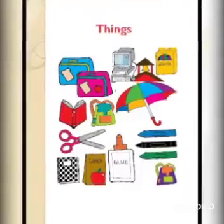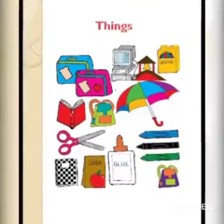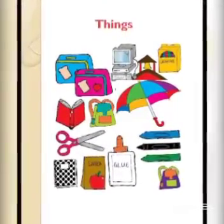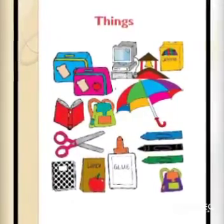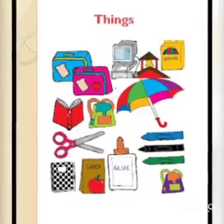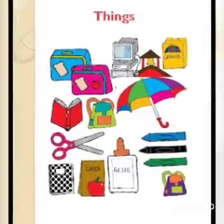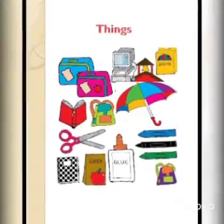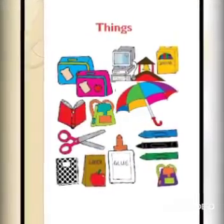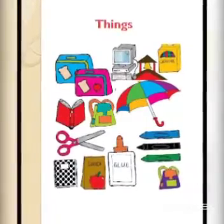Now the third one is things. A naming word can be a name given to things. Here are some pictures of things. For example, bags, scissor, umbrella, books.